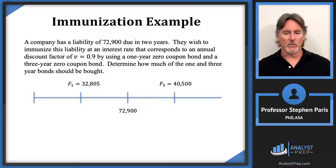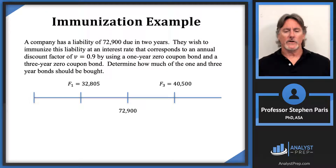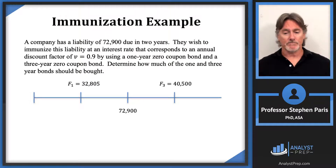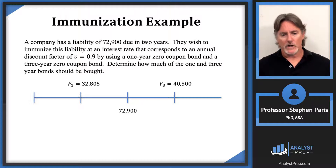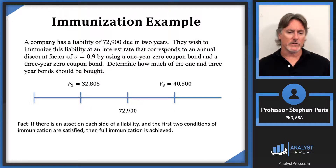With F1 = 32,805 and F3 = 40,500, we have satisfied the first two conditions of immunization. An important fact — stated here without proof — is that if there is an asset on each side of the liability and the first two conditions of immunization are satisfied, then full immunization is achieved, giving a global minimum of zero for the net present value function at the corresponding interest rate.